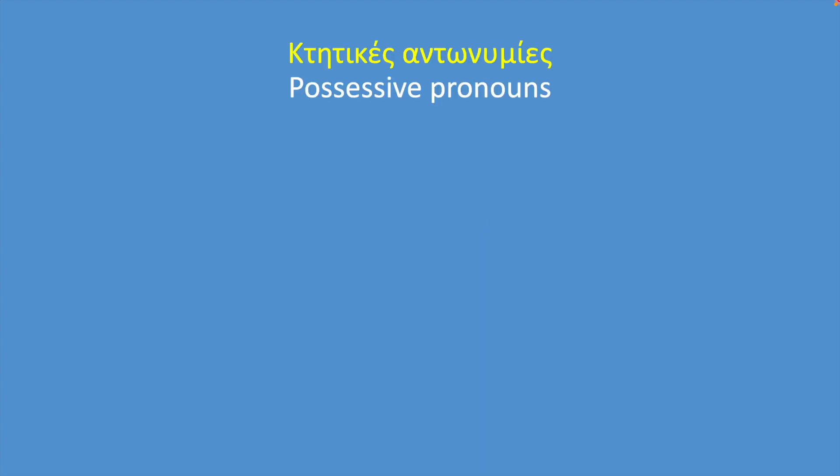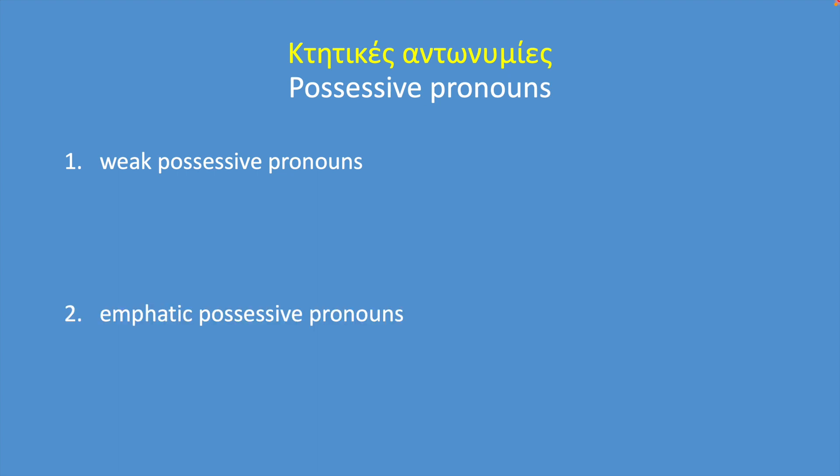The possessive pronouns are pronouns that indicate possession, ownership. The possessive pronouns in Greek fall into two categories. The first one includes the so-called weak possessive pronouns, and the second one includes the so-called emphatic possessive pronouns.